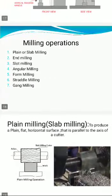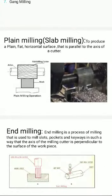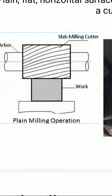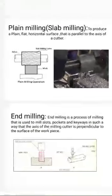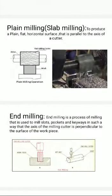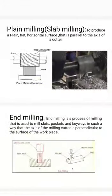From this, any number of operations can be performed: plane milling, slot milling, angular, form, straddle, and gang milling. What is plane milling? This is the cutter, this is the arbor, and this is the workpiece at the bottom. Whenever you want to produce a flat or horizontal surface on the workpiece, at that time you have to use plane milling.